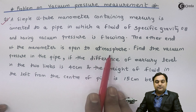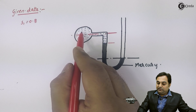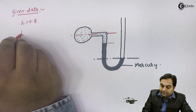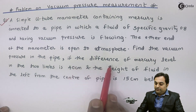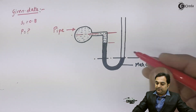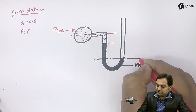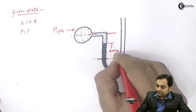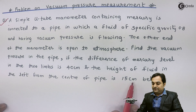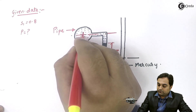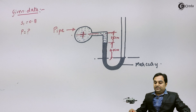The other end of the manometer is open to atmosphere — I have kept this end open to atmosphere. I have to find the vacuum pressure in the pipe, which I will denote as P. The difference of mercury level in the two limbs is 40 cm — that is the level difference between the left limb and the right limb. The height of fluid in the left limb from the center of the pipe is 15 cm below.